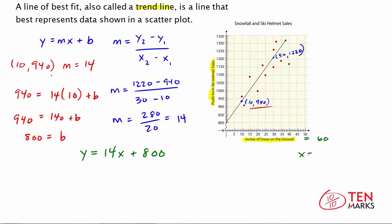60 inches of snowfall means x = 60. So what you would do is use your equation that you already have made, and then substitute x = 60 and solve for y. So y = 14 times 60 plus 800. When you multiply, you get 14 times 60 is 840 plus 800.